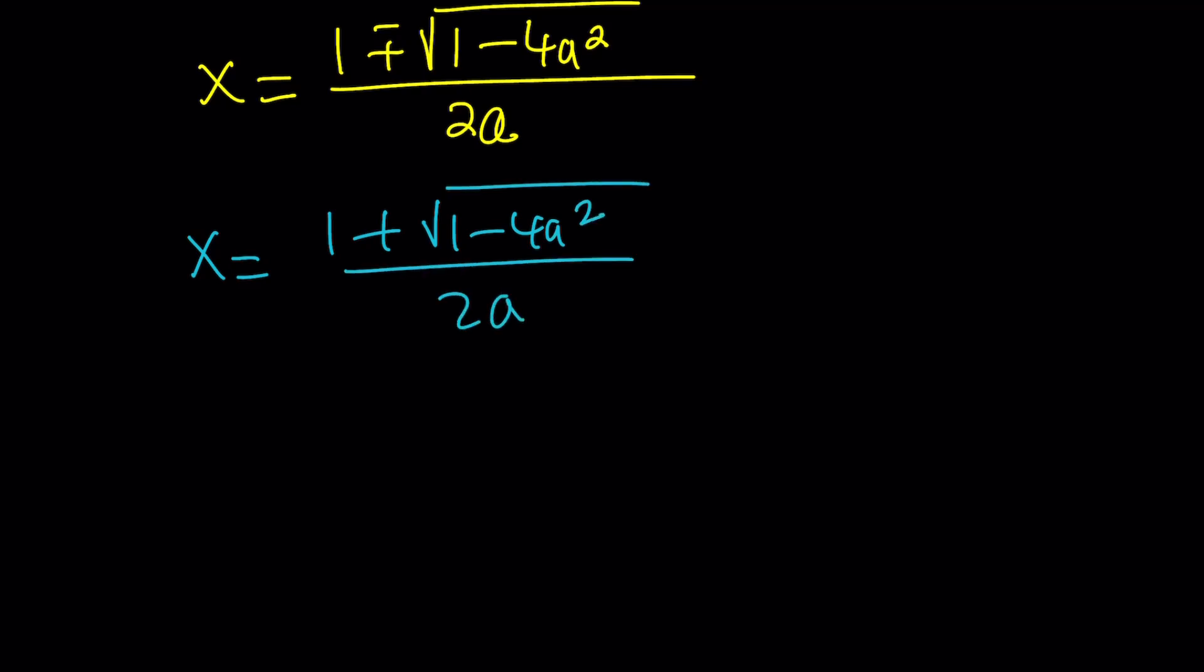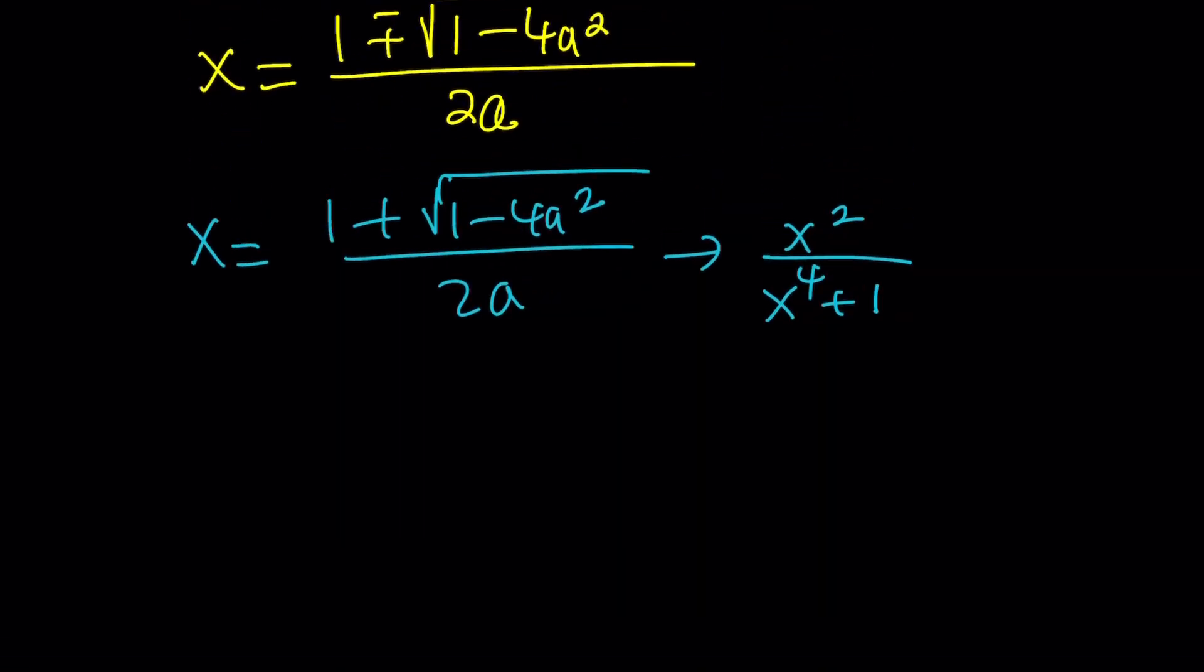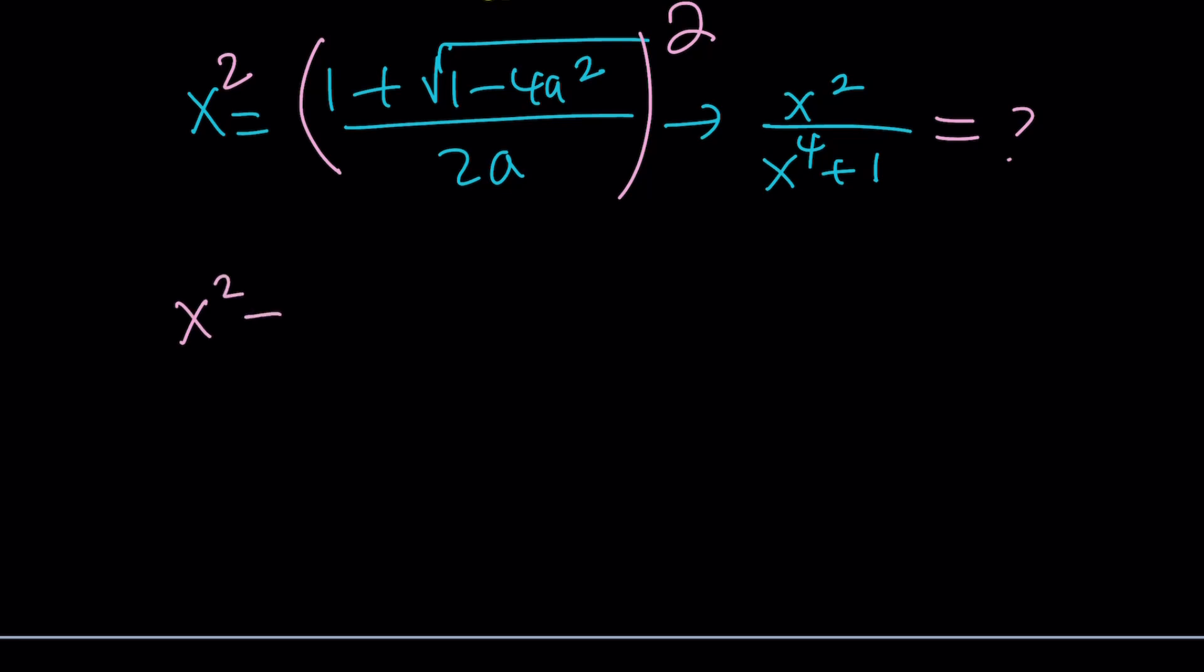Now since x is equal to that, and we're trying to evaluate x squared over x to the fourth plus 1, I should be able to find x squared and x to the fourth from here and just substitute. So to find x squared, let's square both sides. This is what we're trying to find. And now x squared becomes, if you square the numerator, 1, 1 minus 4a squared, x squared and y squared, or a squared and b squared, and then 2ab is just going to be 2 times this.